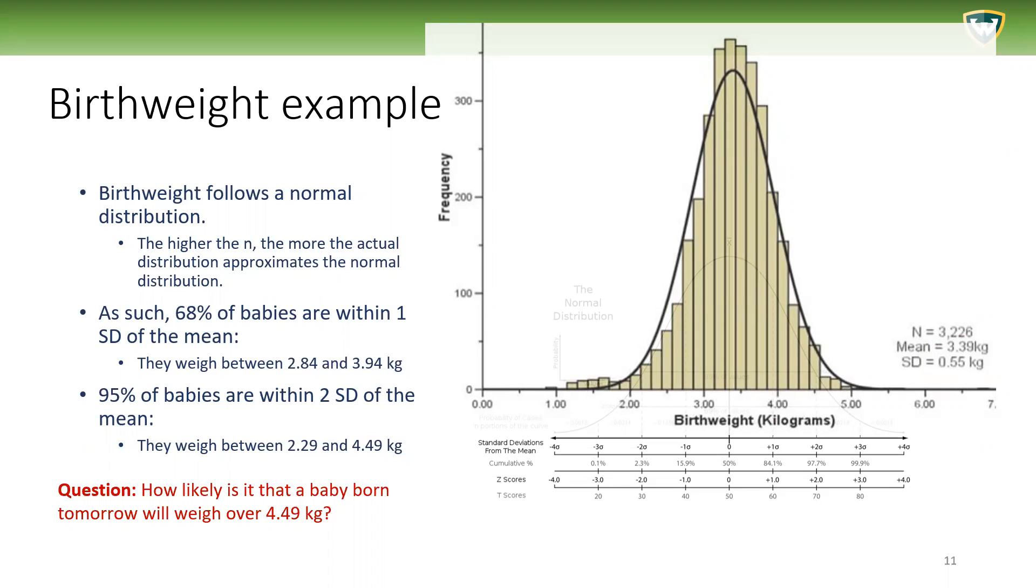We can see that 95% of the instances are within two standard deviations, right? That means that 95% of babies are going to weigh between 2.29 and 4.49 kilograms. So the chance that a baby will weigh over 4.49 is, you can say, 5% or less.